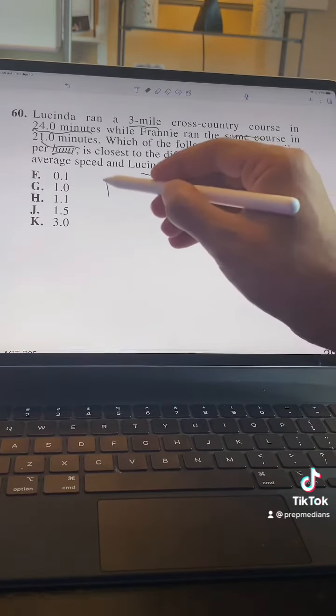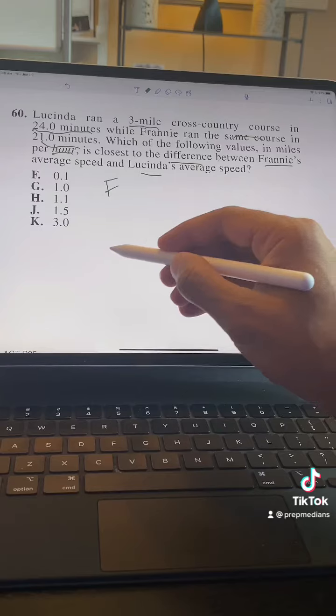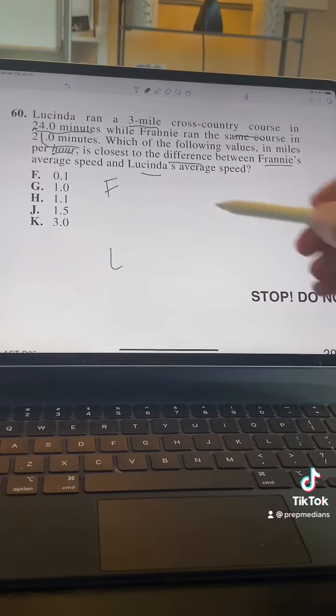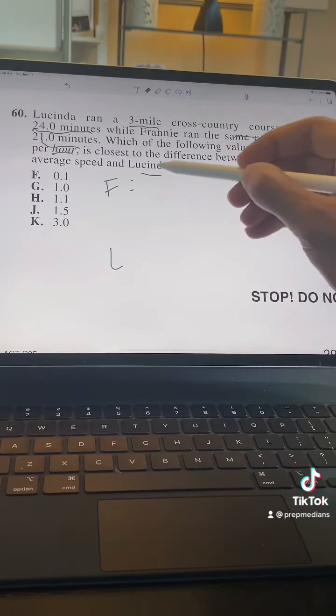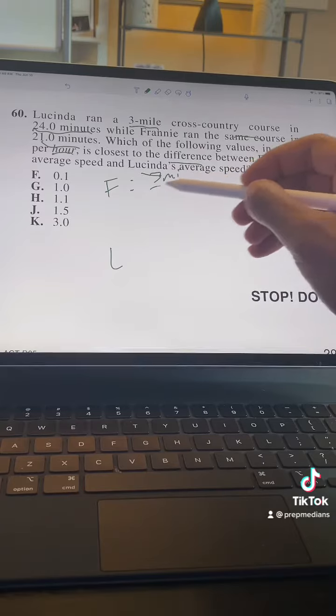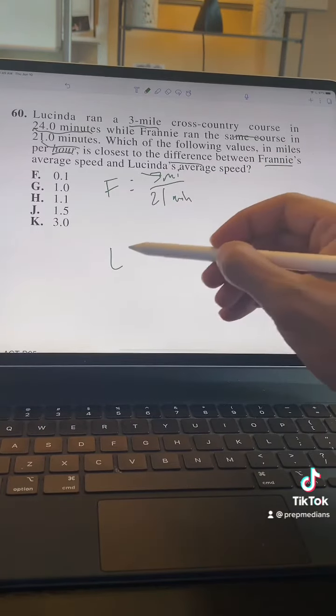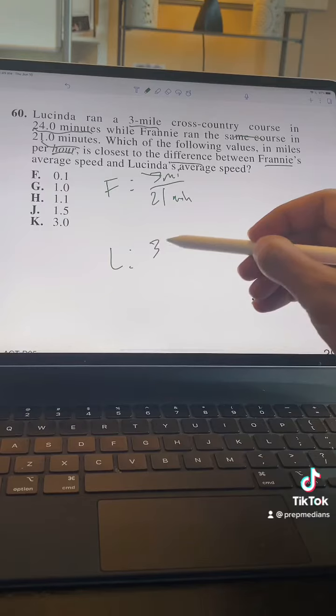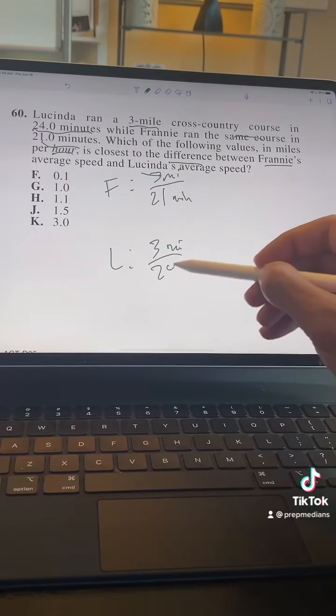So we're going to put Franny up here because she is faster, and Lucinda down here because she is slower. And then we've got three miles per 21 minutes, as you'll recall. And for Lucinda, we've got three miles per 24 minutes.